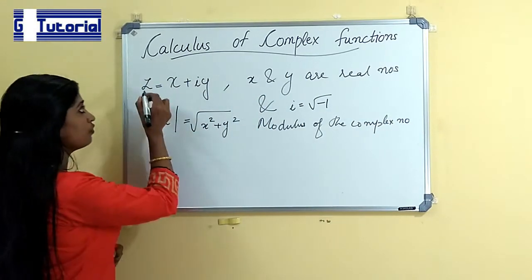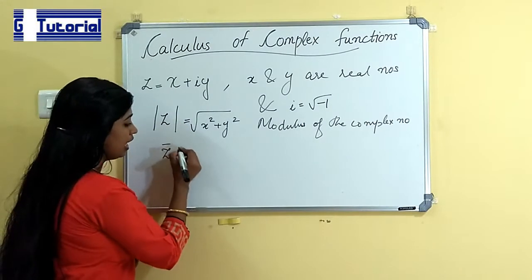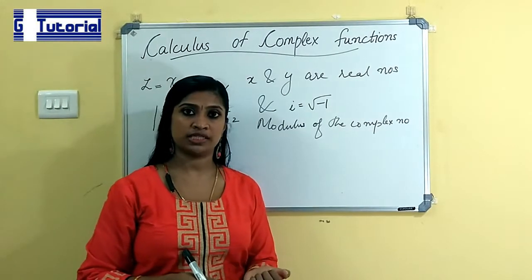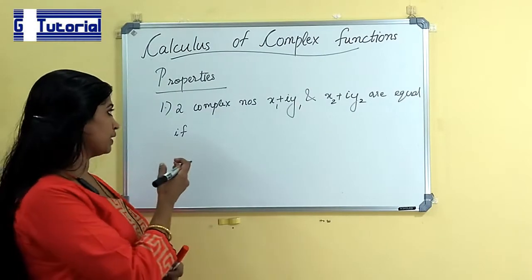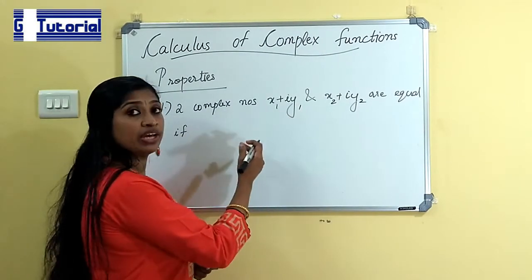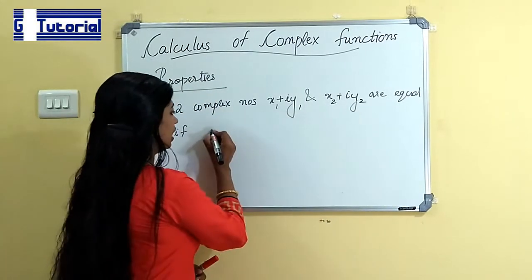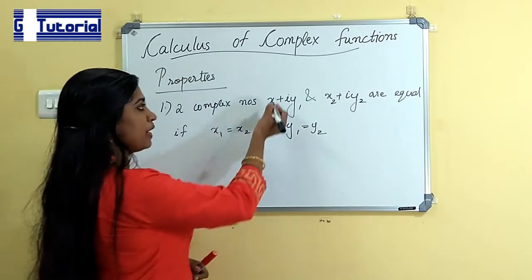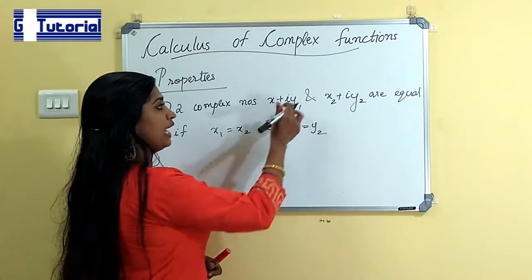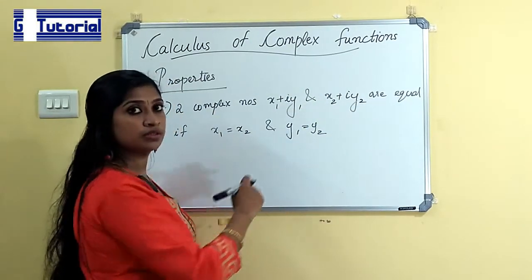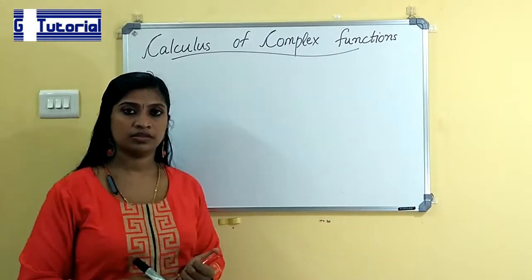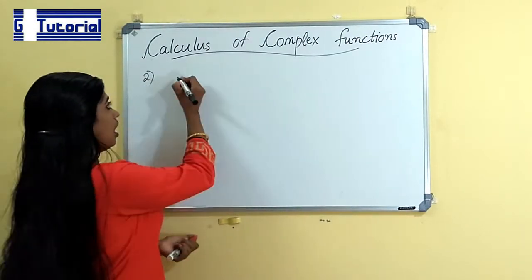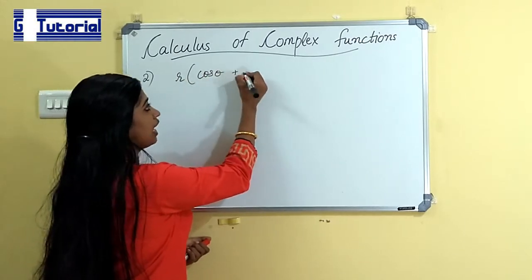The conjugate of this complex number is denoted as Z-bar and it is equal to X minus iY. Now let us see some of the properties of a complex number. First property: two complex numbers X1 plus iY1 and X2 plus iY2 are equal if X1 equals X2 and Y1 equals Y2. That is, the real parts X1 and X2 are equal and the imaginary parts Y1 and Y2 are equal. Now the second property: every complex number can be denoted as R(cos θ + i sin θ).